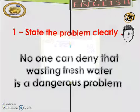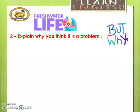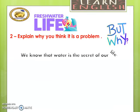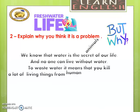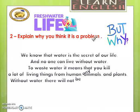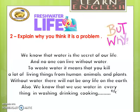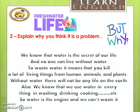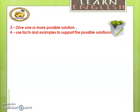But why is it a dangerous problem? We explain why we think it is a problem. As we know, water is the secret of our life and no one can live without water. To waste water means that you kill a lot of living things — humans, animals, and plants. Without water there will not be any life on Earth. Also, we use water in everything: washing, drinking, cooking, and so on. Water is the engine of life and we can't waste it.